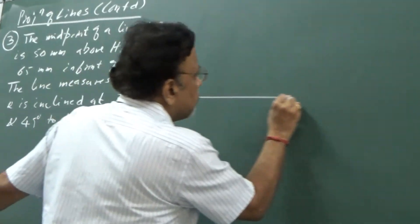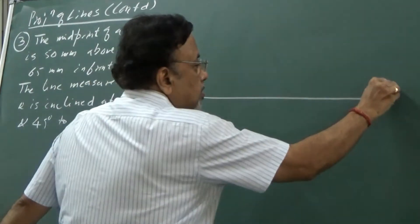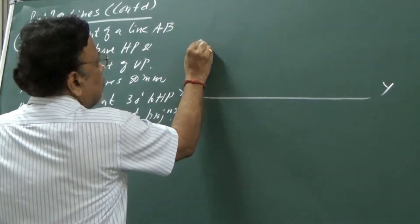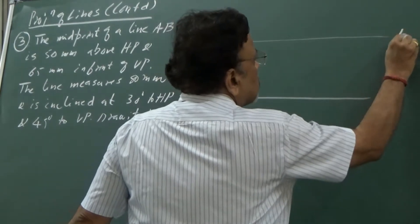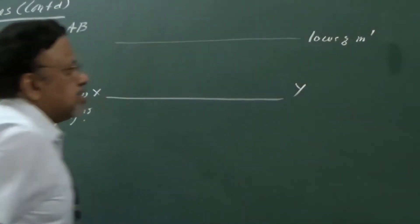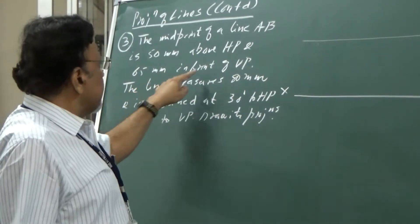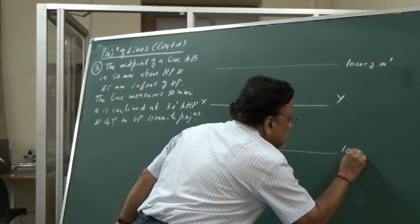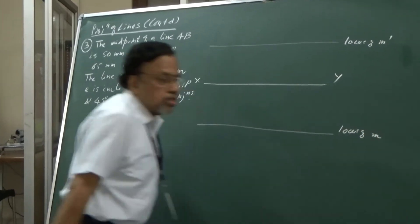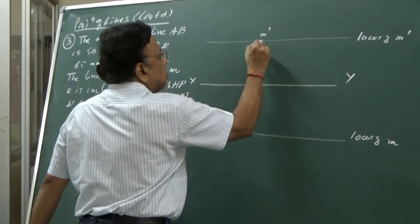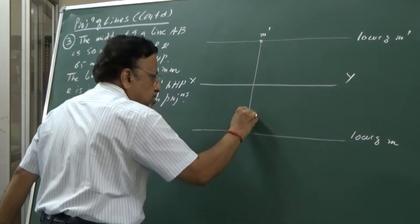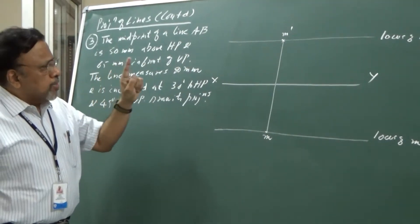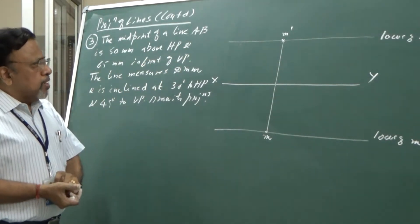Draw the XY line. The midpoint of line AB is 50 mm above HP, so let me draw the locus of that — this is the locus of M dash. And it is 65 mm in front of VP, so let me draw this locus also, written as locus of M. That is, instead of determining end A, we have determined the location of the midpoint M.